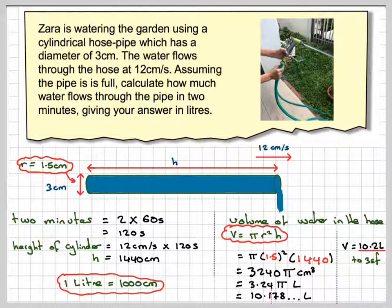Okay, so this has been a video to show you how much water flows from a pipe in two minutes when the water is flowing at 12 centimeters per second from a hose pipe which has a diameter of 3 centimeters. I hope you've understood, and I thank you very much for watching.